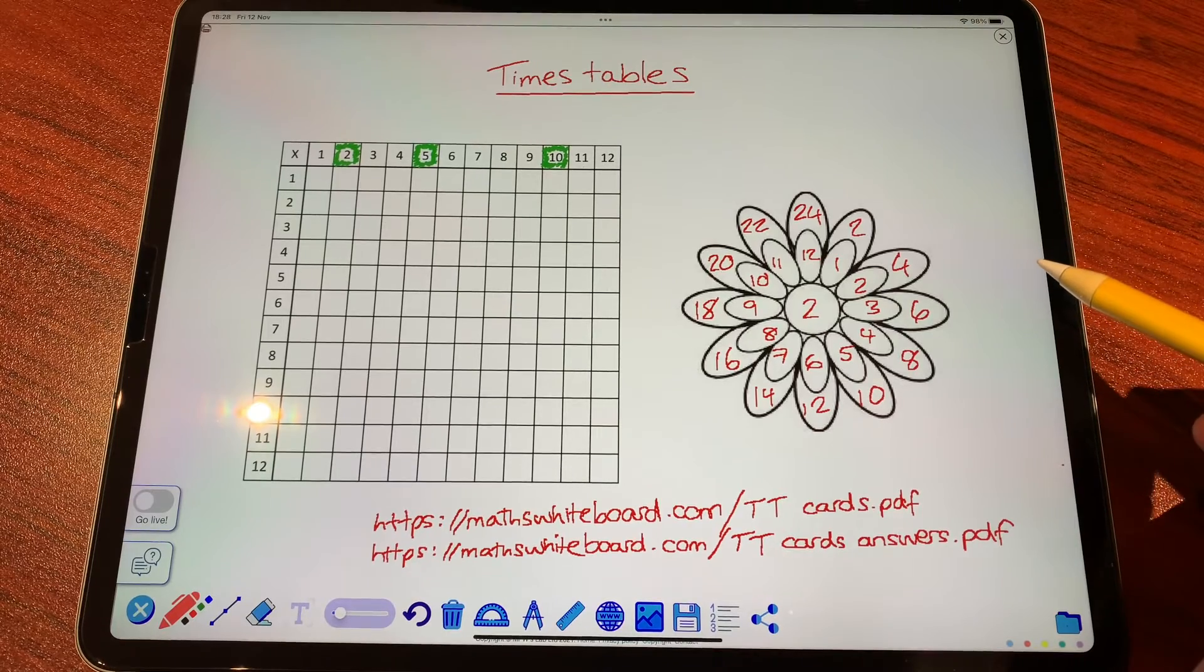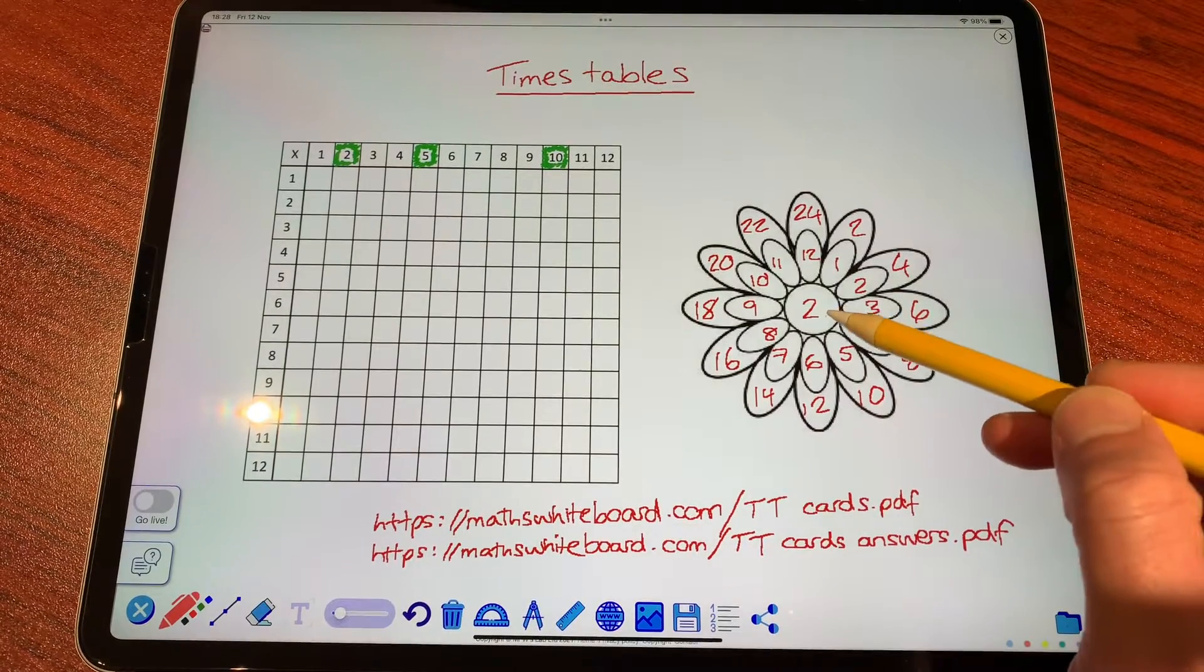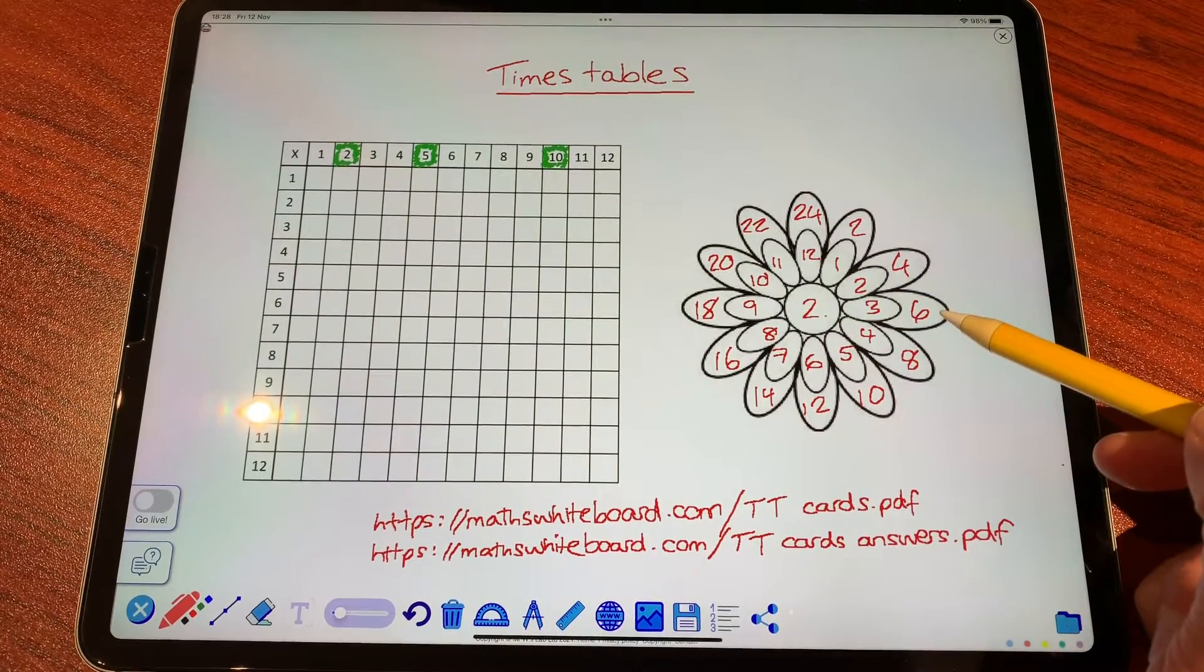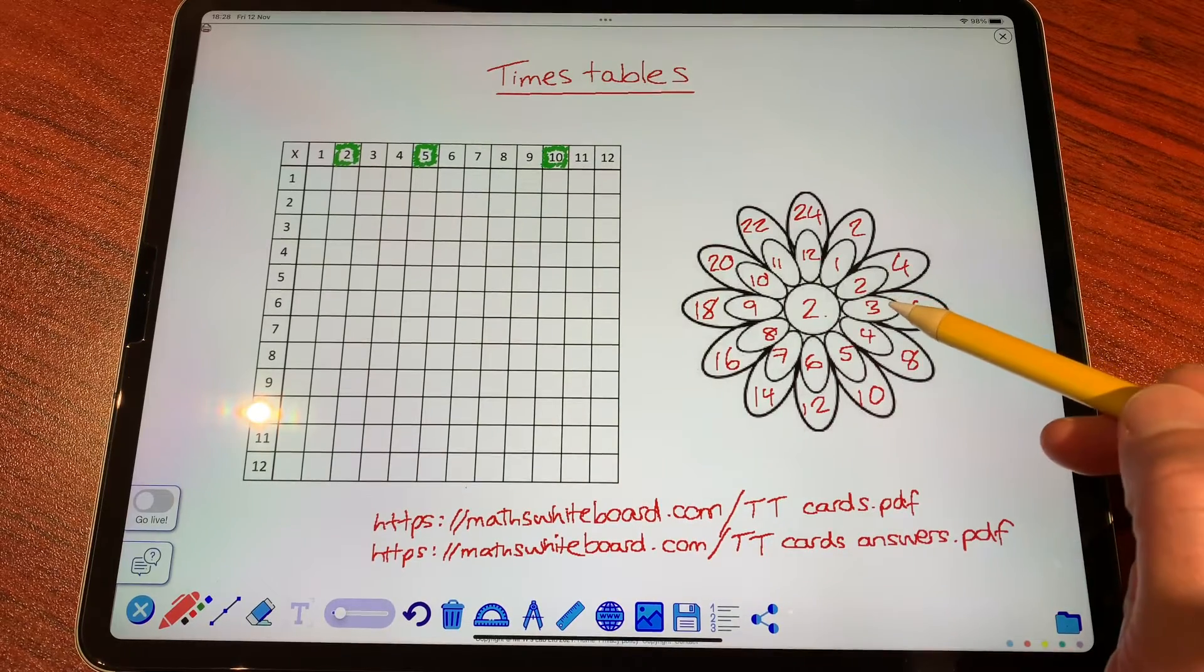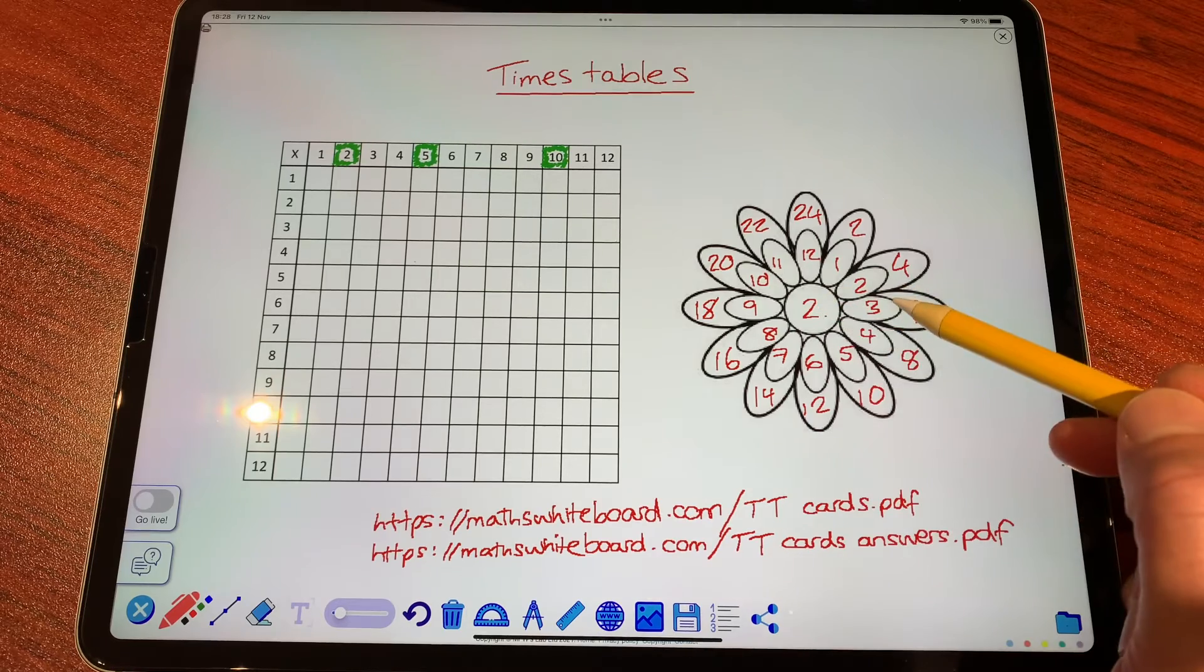Now knowing your multiplication facts is great, but knowing the inverse is equally important. So if I know that 2 times 3 is 6, I also know that 6 divided by 3 is 2, or 6 divided by 2 is 3.